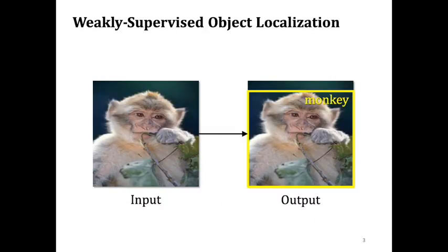For those of you who are not familiar with weakly supervised object localization, also known as WSOL, let me briefly explain it. WSOL assumes there is one single object per image. Given image level class annotation, our goal is to localize an object.